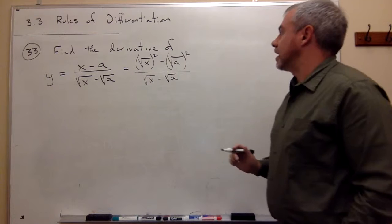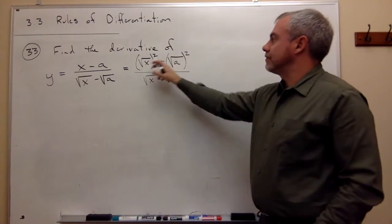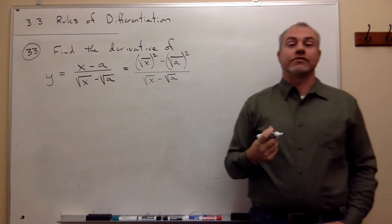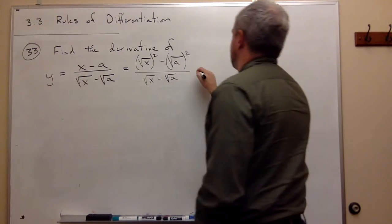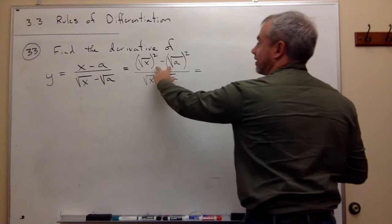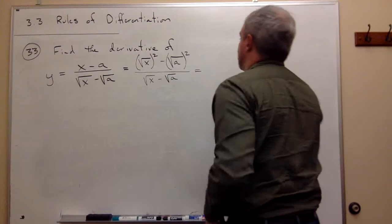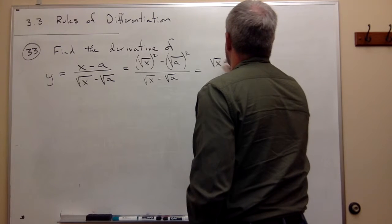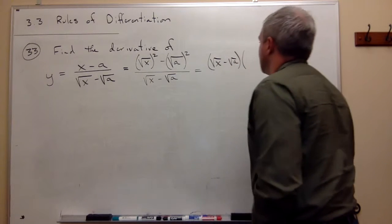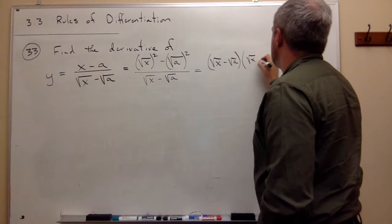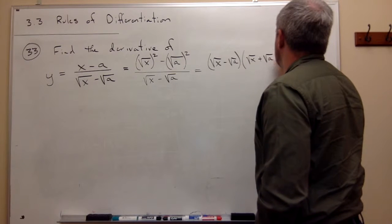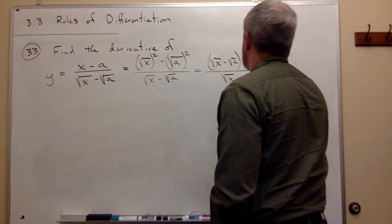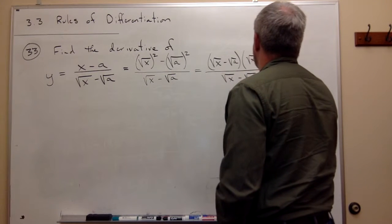So let's look at this. Now I have the difference of two squares on top. And since it's the difference of two squares, I can factor it. So I'll factor this by the difference of squares into the square root of x minus the square root of a times the square root of x plus the square root of a, all divided by the square root of x minus the square root of a.